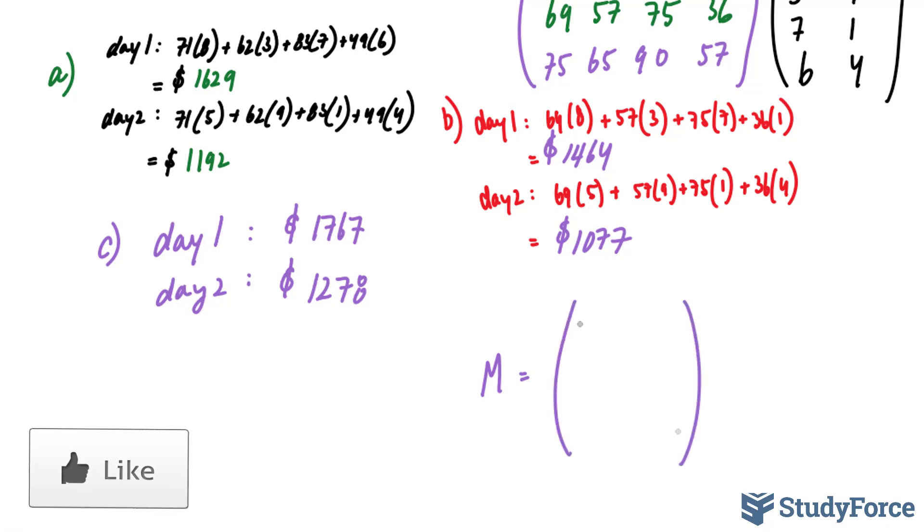Where M represents day one and day two: 1629 and 1192. Row two represents the discounted version at 1464 and 1077. And the last row represents the marked up version, 1767 and 1278.